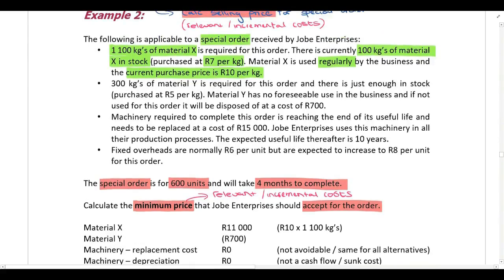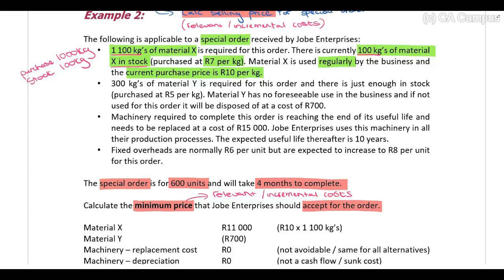We need 1,100 kilograms total. 100 kilograms are already in stock, which means I need to purchase 1,000 kilograms. If inventory is not in stock and we need to purchase it, we use the current purchase price of 10 Rand per kilogram, because we need to go and buy it — so the relevant cost is the cost to buy it.